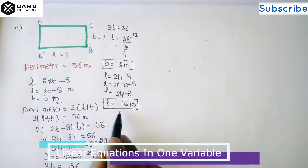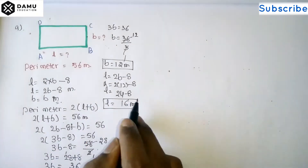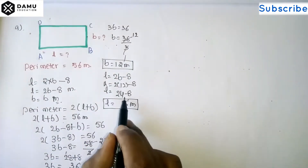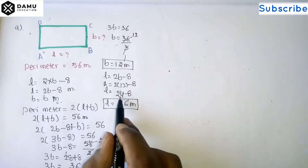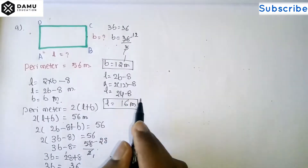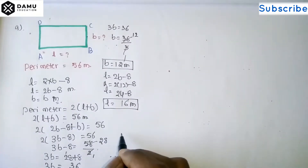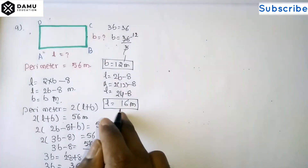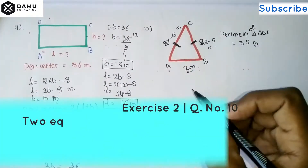That is how we solved question nine: 24 minus 8 gives 16 meters. Thanks for watching, please subscribe.